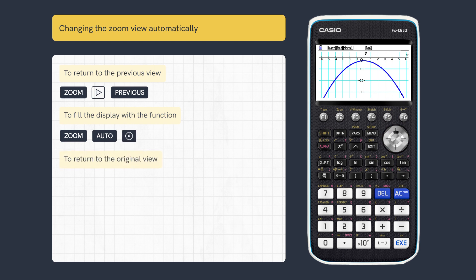Sometimes it may be useful to return to the original view. Press Zoom, then Further Menu and Original.